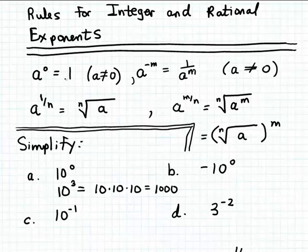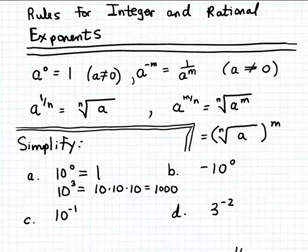This is a rule you need to memorize: whenever you raise a non-zero base to the zero power, the result is always one. So 10 to the zeroth power simplifies to one. There are good mathematical reasons why this is true — it's not just invented out of thin air — but we won't discuss those reasons in this short video clip.